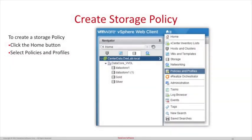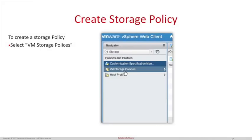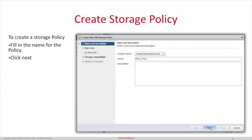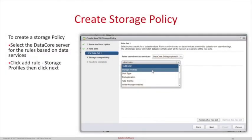Now that the VVOL was created, the next step is to create the storage policy. Click the Home button on the top center of the window and click Policies and Profiles. Select VM Storage Policies on the left side. Click the New button on the center panel. Fill in the name of the policy and click Next. Now click on Rules Based on Data Services, and click DataCore SanSymphony V. Click the drop-down below that, click Storage Profiles, and click Next.